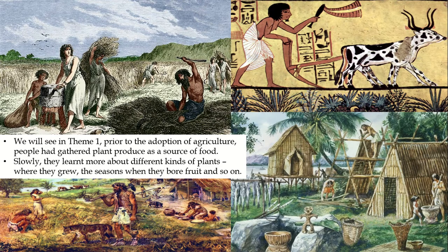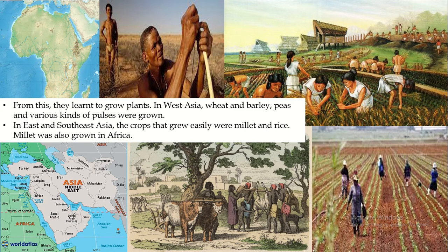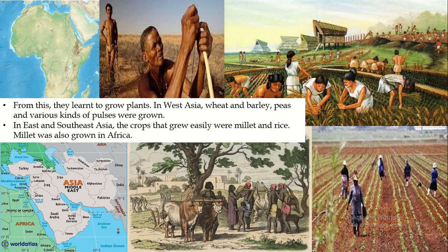From observing the plants, they learned to grow plants. In West Asia, wheat, barley, peas, and various kinds of pulses were grown. In East and Southeast Asia, the crops grown were millets and rice. Millets were also grown in Africa.